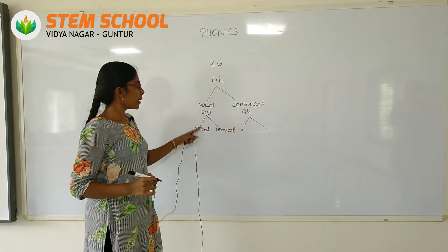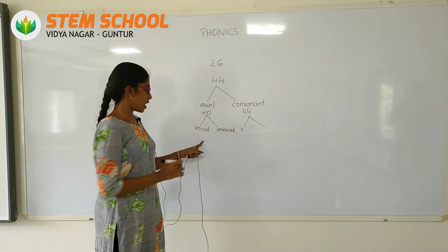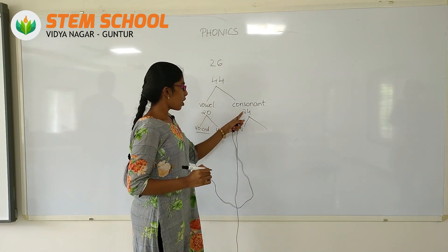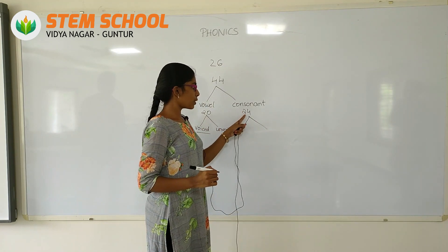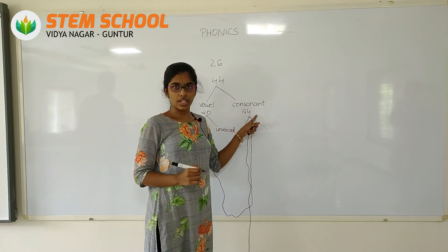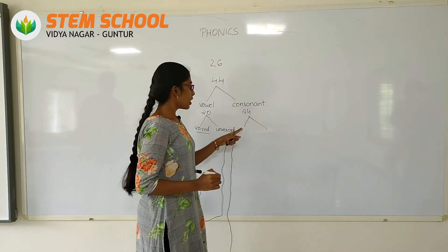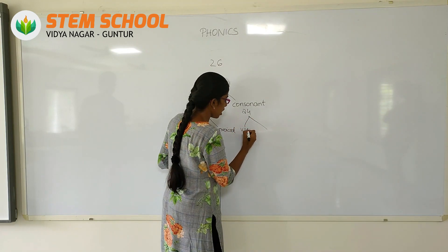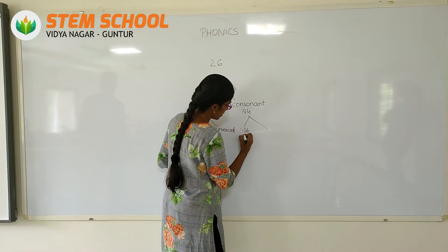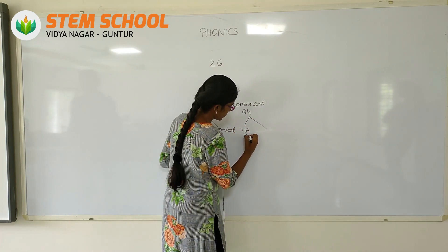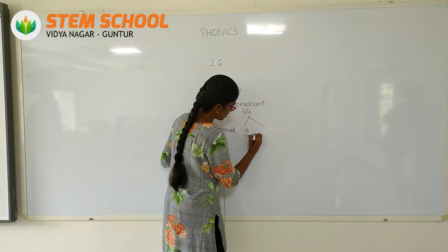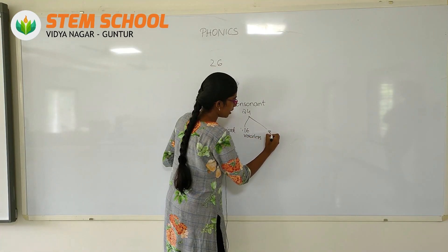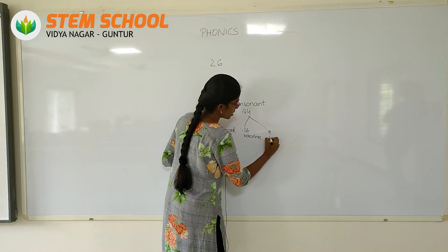Here, 20 are voiced sounds. And for consonant sounds, we have 24 consonant sounds, of which 16 are voiceless and 8 are voiced.